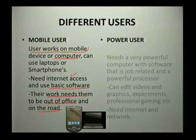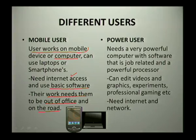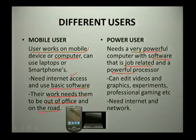Our last user is a power user. These users really need the best computer — a very powerful computer with software that is job-related. Job-related means it has to be software that allows them to do whatever they are doing at work. For example, if you think of someone who is a designer, they would obviously need some designing software. These computers would have a very powerful processor because they need to process a lot of information. Power users can edit videos — and videos take up a lot of space — so a powerful computer is suitable for such purposes.